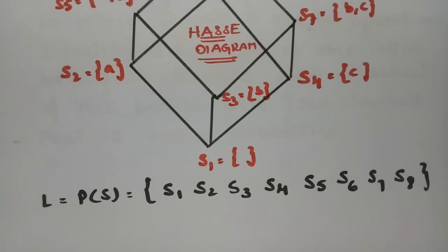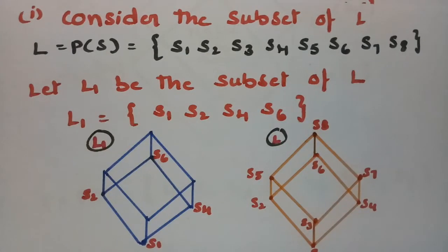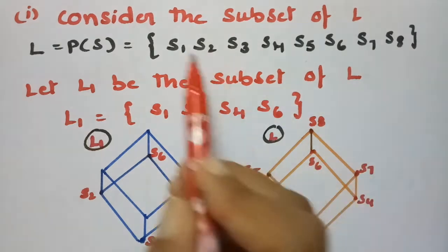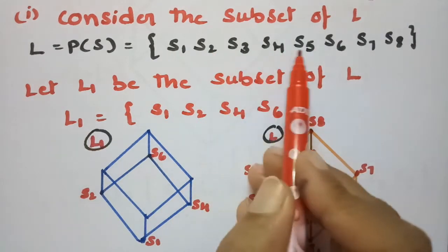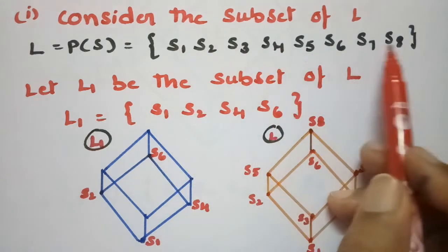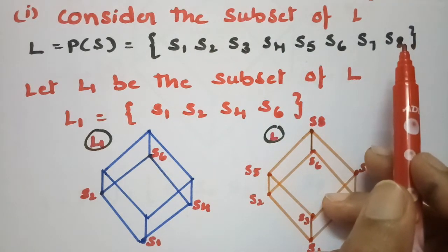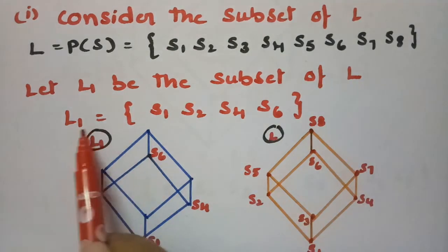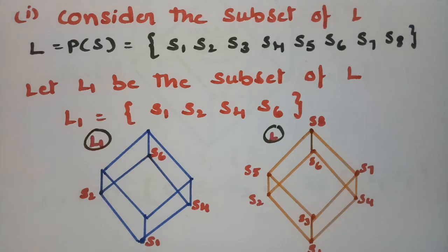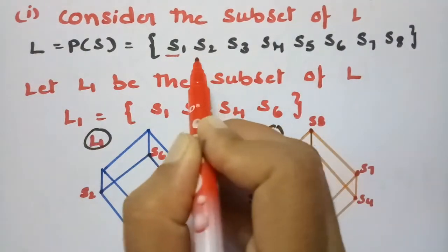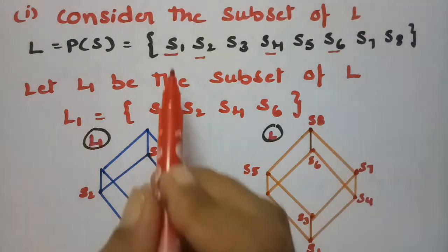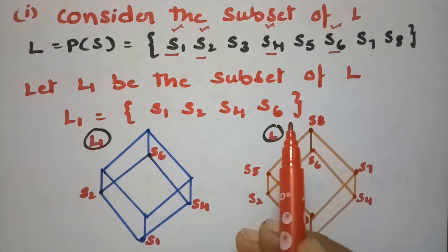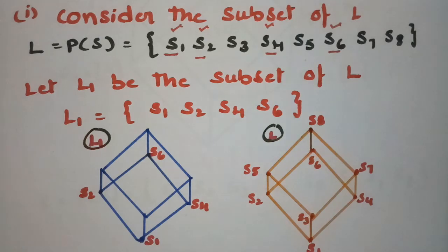Consider a subset of L. The main lattice L contains all eight elements S1 through S8. We have to select four elements from this main set L and show that the subset is a sublattice. Let L1 be a subset of L. The four elements chosen are S1, S2, S4, and S6. I have created set L1 with these four elements and will now show that this is a sublattice.